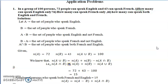Look at the first problem. In a group of 100 persons, 72 people can speak English and 43 can speak French. We need to find: (1) how many can speak English only, (2) how many can speak French only, and (3) how many can speak both English and French. Before I start the solution, I have to define my sets — A and B — because the people speak only two languages.